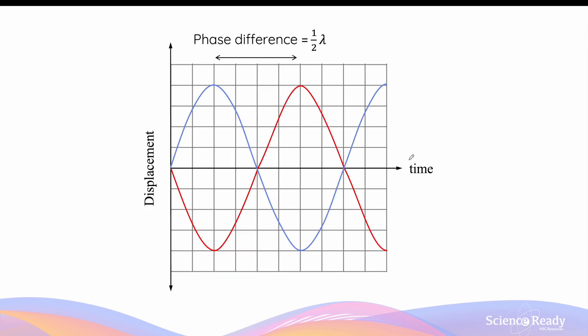Here is another example where the two waves are exactly out of phase by half a wavelength and therefore undergo destructive interference. What's different about this example is that the amplitude of the two initial waves are exactly equal — it's just that the crest and trough are in the same time position. When you get this scenario where the two waves are out of phase and have the same amplitude and you do the subtraction between the crest and trough, the resultant wave actually has no oscillation — no amplitude whatsoever.